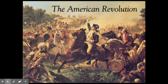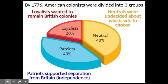We've been building up to this huge event up to this point. By 1776, at the outset of the American Revolution, you basically had three groups of colonists. About 40% were patriots looking for independence, about 20% were still loyal to Great Britain and didn't want to fight them, and about 40% were neutral — they didn't really know whose side to go on.